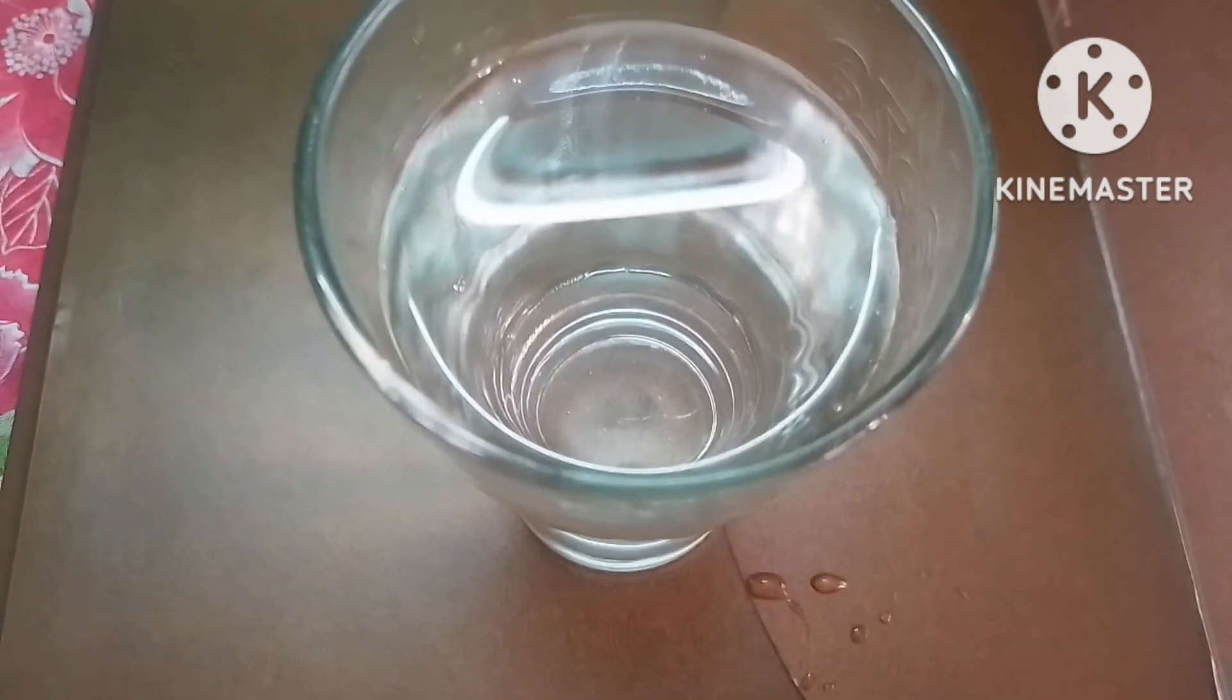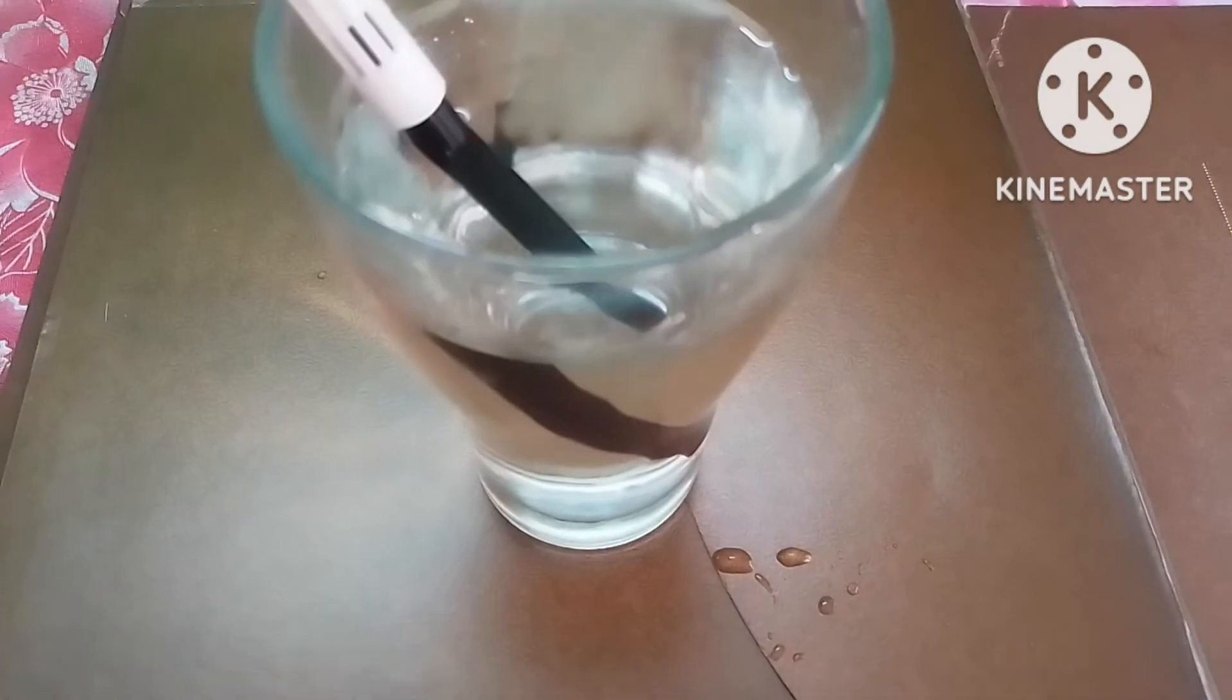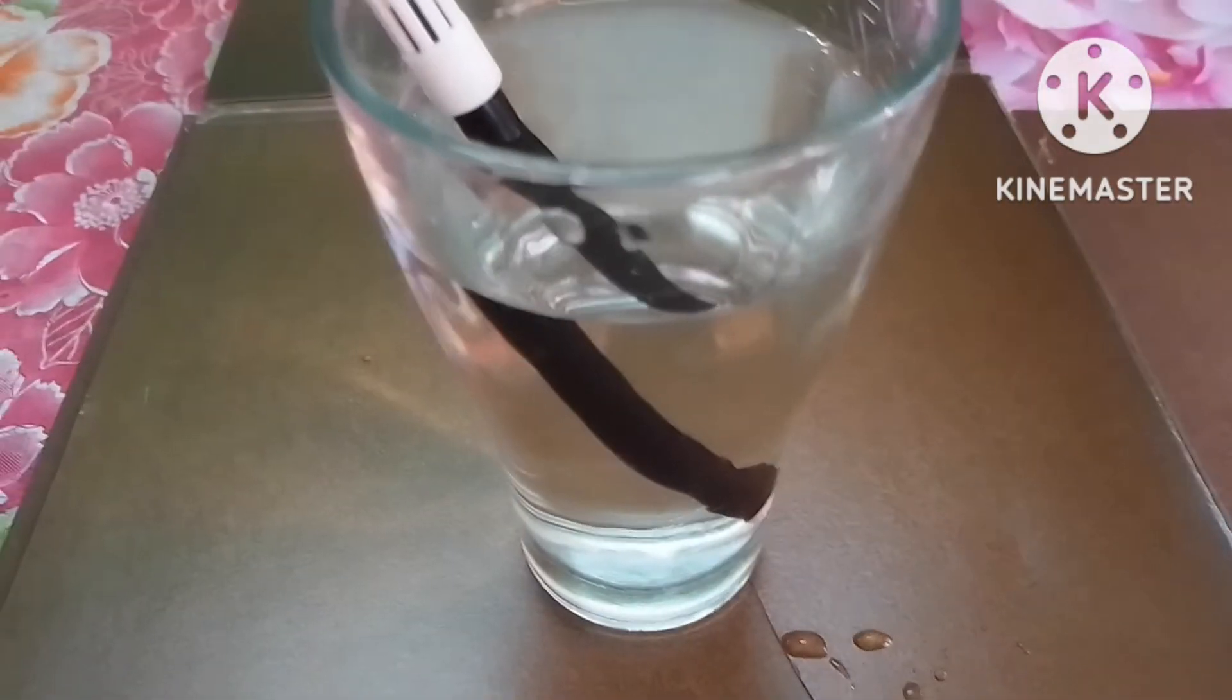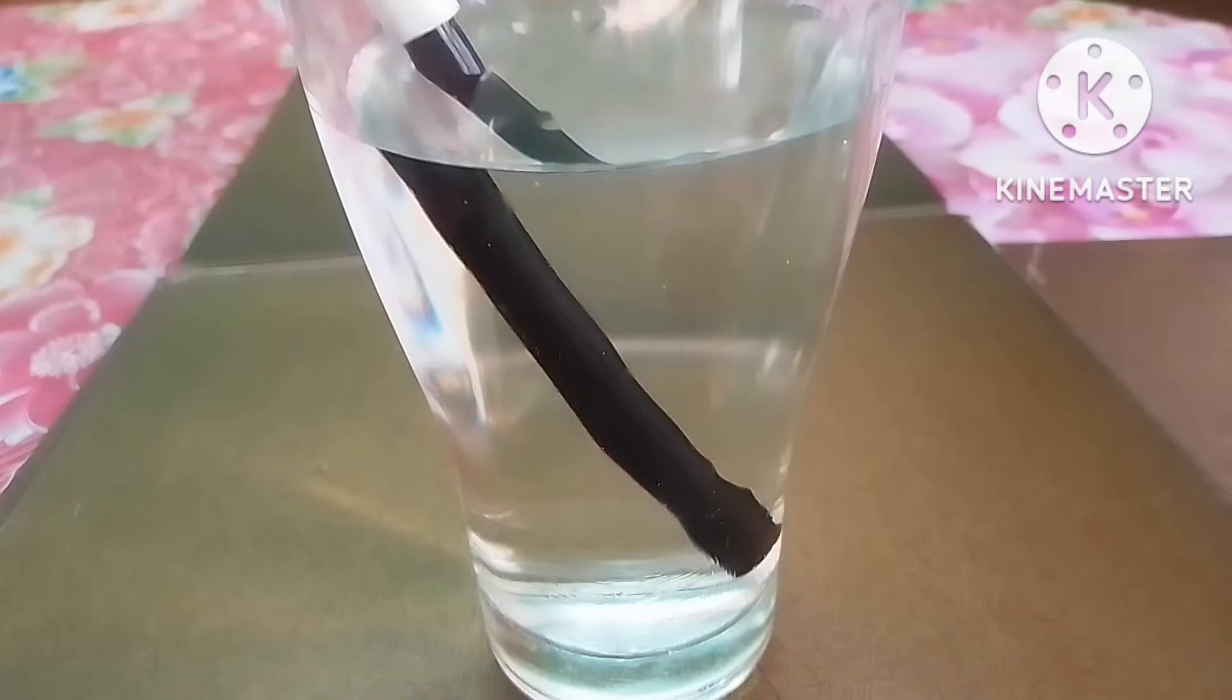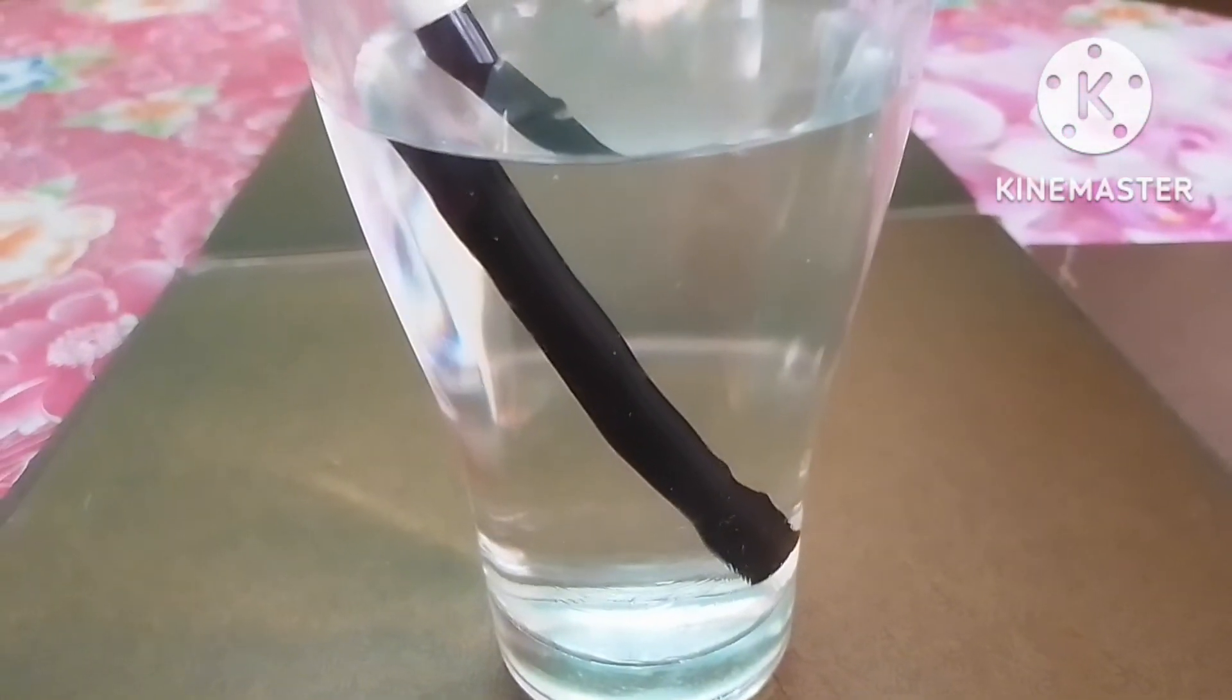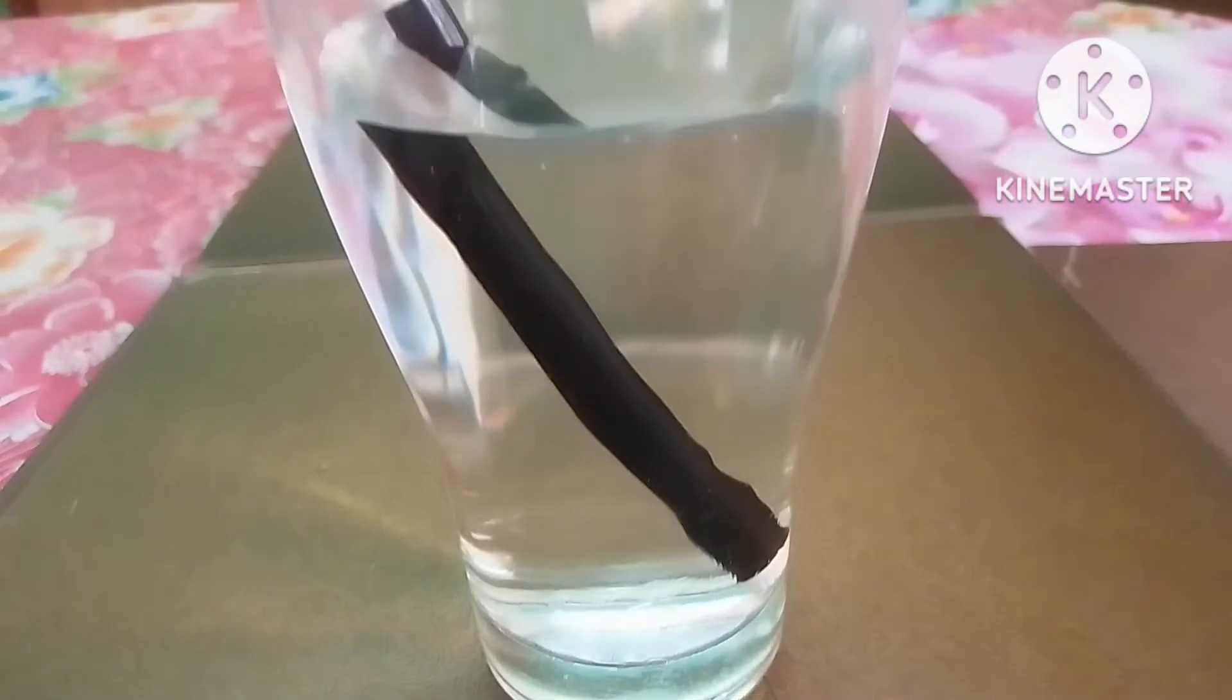You can see the pen is partially bent or broken at the surface of the water. This illusion of vision is generated due to the refraction of light, because light ray is passing from air medium to water medium.